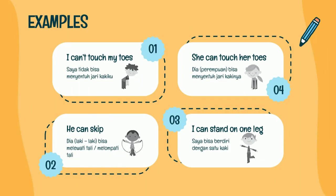Supaya kalian lebih paham, Mister akan berikan contohnya. Number one: I can't touch my toes — artinya saya tidak bisa menyentuh jari kakiku. I di sini sebagai subject, can't sebagai verb, touch my toes sebagai objek. Yang kedua: He can skip — dia bisa melompati tali. He sebagai subject, can sebagai verb, skip sebagai objek.